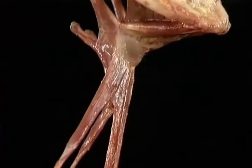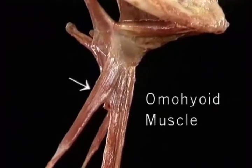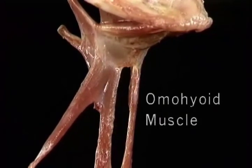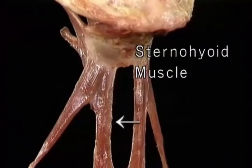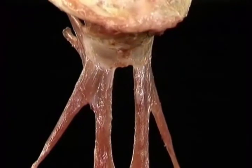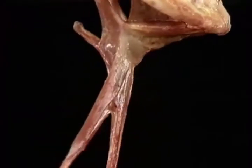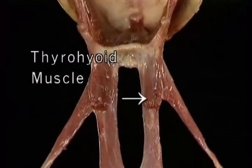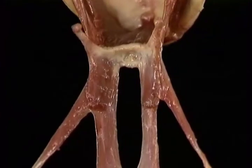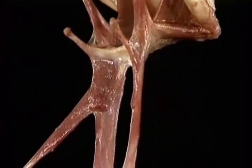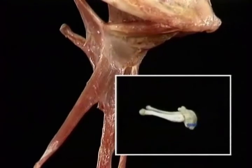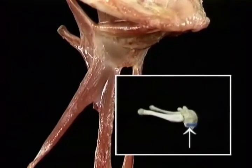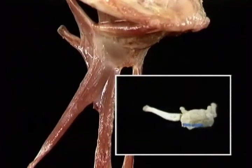Here's the body of the hyoid bone. Here's the upper end of the omohyoid muscle, which goes all the way down to the scapula. Medial to it is the sternohyoid muscle, which goes to the sternum. Behind these two is the short thyrohyoid muscle, which goes down to the thyroid cartilage. These muscles insert on the edge of the body of the hyoid bone: the thyrohyoid here, the omohyoid here, and the sternohyoid here.